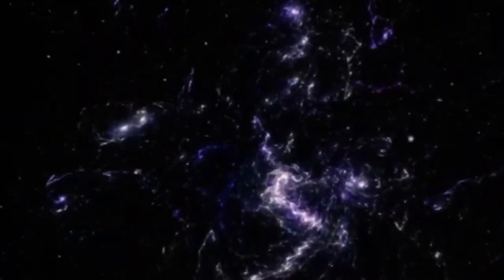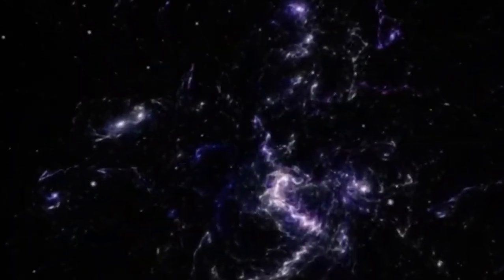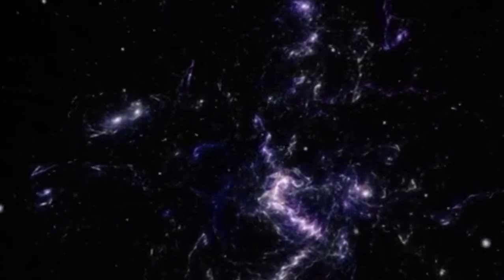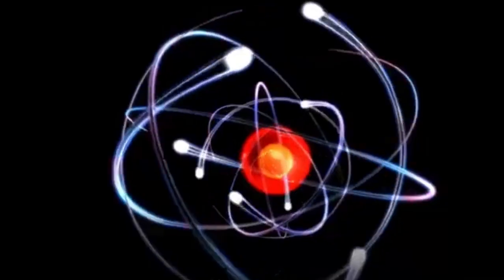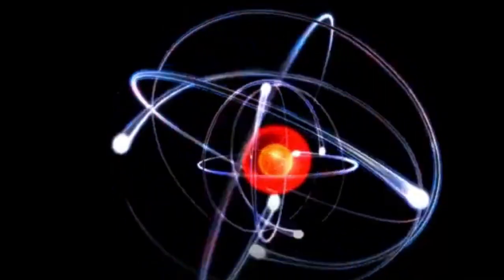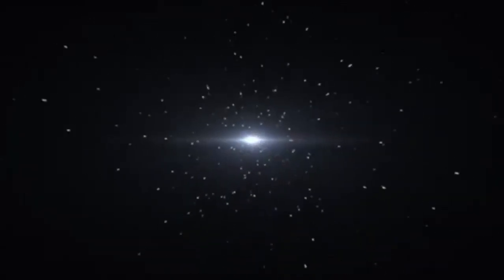Defining the universe itself is a complex task. We commonly refer to the observable universe, which is the part of the universe that we can see from Earth. This visibility is constrained by the speed of light. Since light has a finite speed, the farther away an object is, the longer it takes for its light to reach us. Therefore, our observational limits are set by the distance light has traveled since the beginning of the universe approximately 13.75 billion years ago.